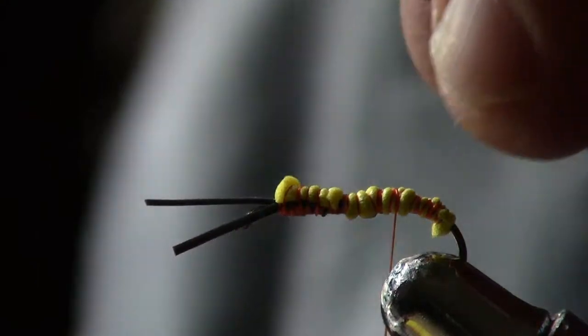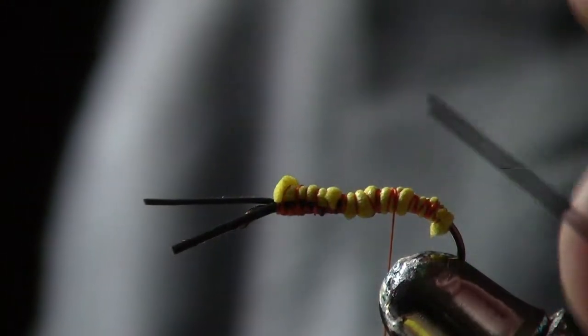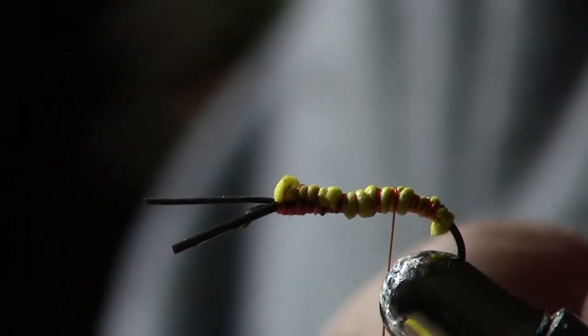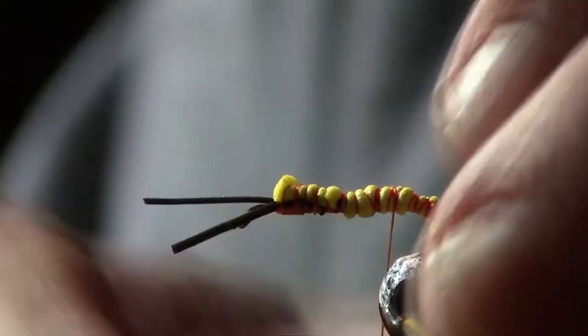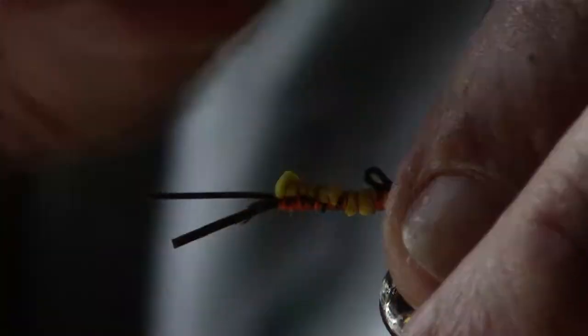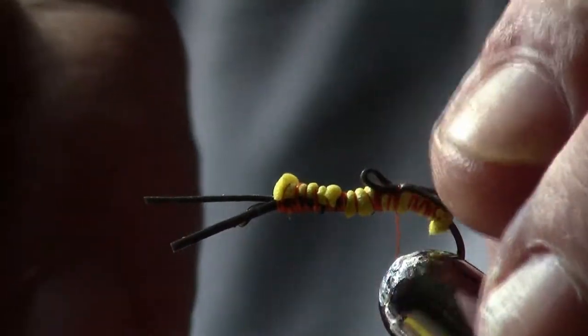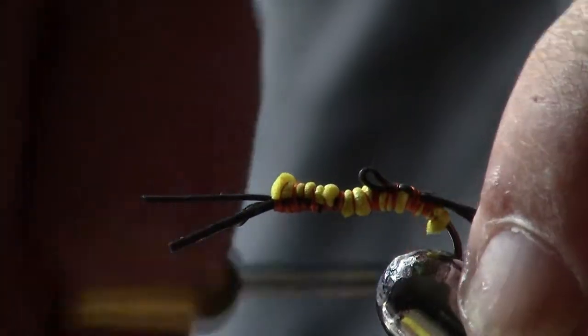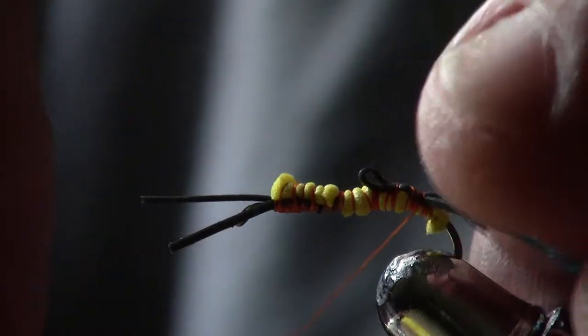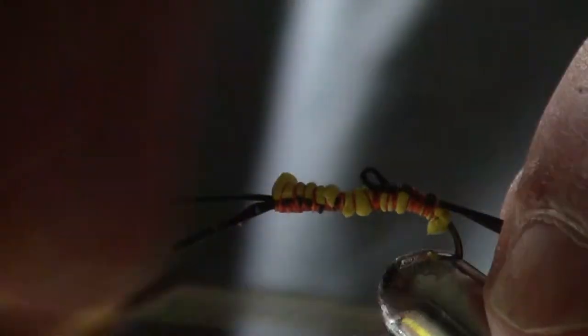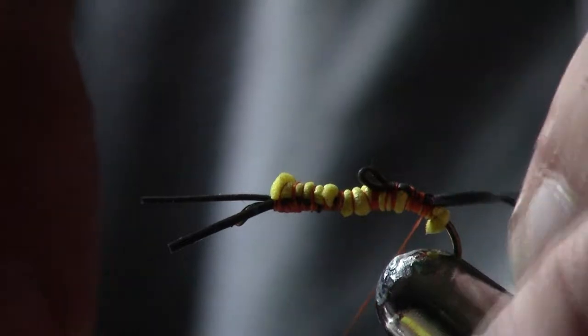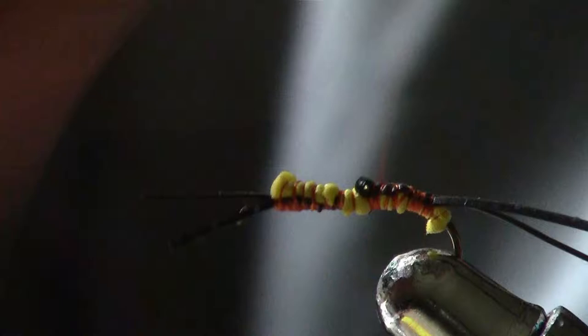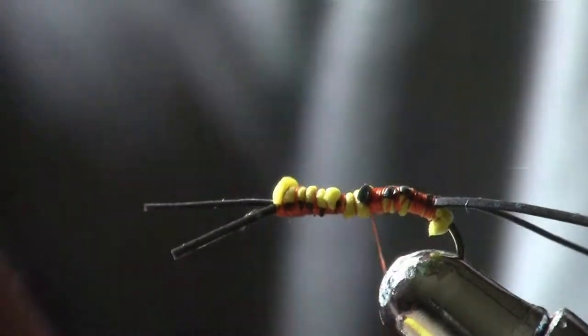Now I'm going to cut me some little piece of black rubber legs for the tentacles that come out of the back of the egg sack. Try to get those situated about like I want them. That's good enough. Then go ahead and wrap them on down.